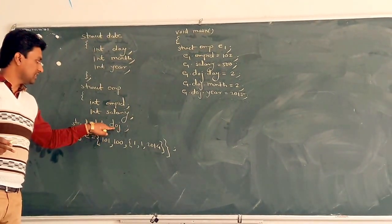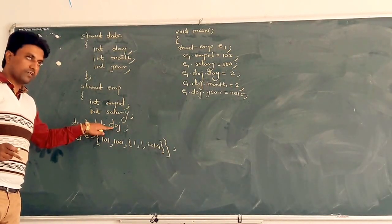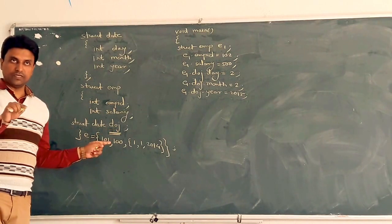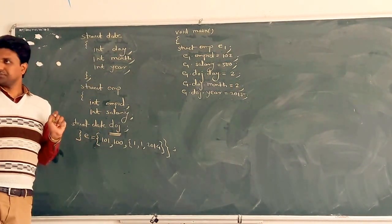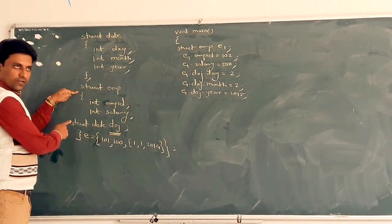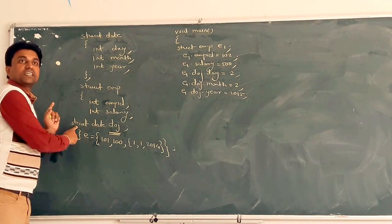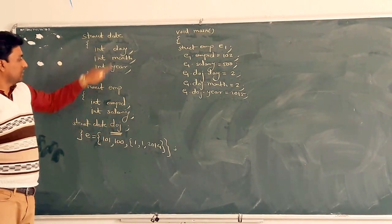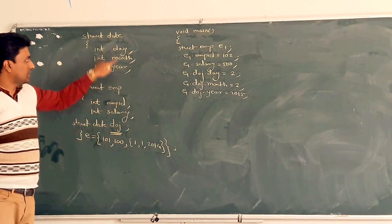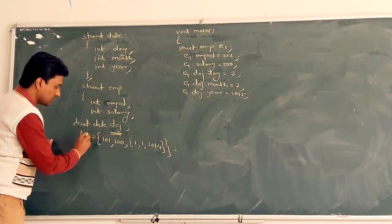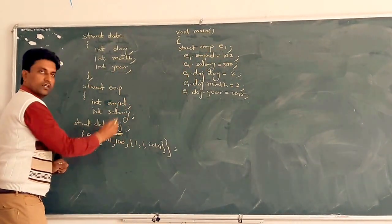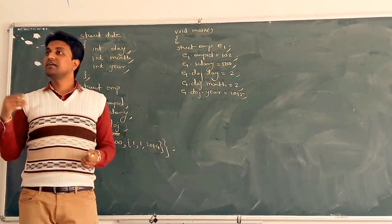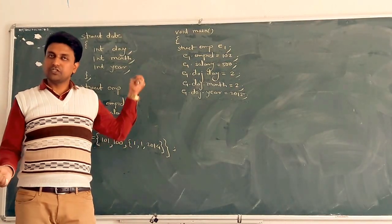DOJ (date of joining) is a structure variable as well as a member of struct EMP. It is one of the members of structure EMP. This is called a nested structure variable. We access data members of date through E1.DOJ.date, E1.DOJ.month, E1.DOJ.year. We can initialize statically the data members of a nested structure in this way.